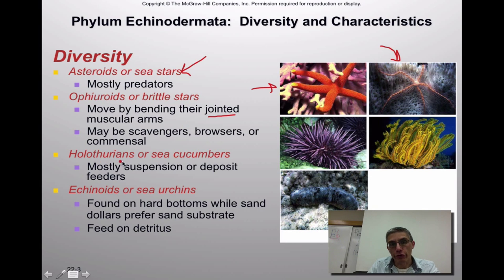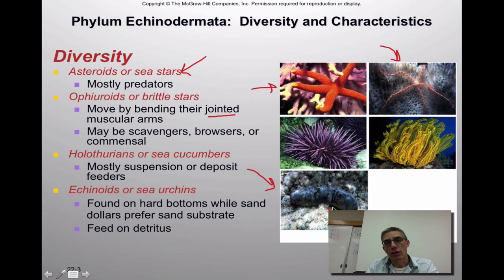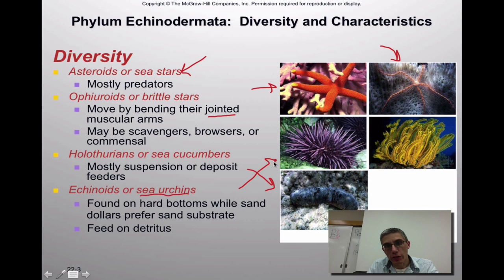The third group is the holothurians, called the sea cucumbers. These are rather nondescript, plain-looking members — they don't move around much, and features you'd notice in other members of this phylum are very reduced or hard to detect. Sea cucumbers are mostly suspension or deposit feeders, filtering things from the water. The echinoids, or sea urchins, are often found on hard-bottom habitats, while sand dollars prefer sandy substrates. They feed on detritus — decaying organic matter.